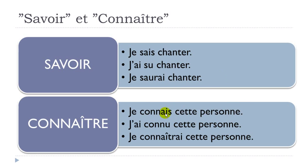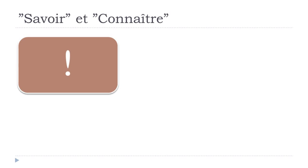Now Connaître: 'je connais cette personne' — I know this person. 'Personne' is feminine, so we use 'cette.' In passé composé: 'j'ai connu cette personne.' In the future: 'je connaîtrai cette personne.' Not too difficult!